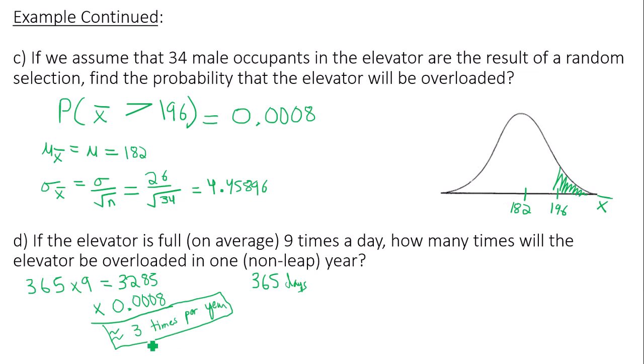We want our number as close to zero as possible. Three times per year is a reason to be concerned, because if that elevator malfunctions three times a year, I'm pretty sure that business, or wherever that elevator is, is not going to be staying in business. So yes, there is reason to be concerned here. Thank you for watching.